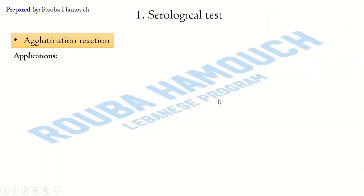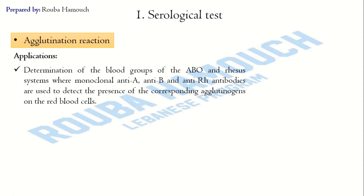The first application of agglutination reaction is the determination of blood groups in the ABO and Rhesus systems, where we use monoclonal antibodies — anti-A, anti-B, and anti-Rhesus — to detect the presence of the corresponding agglutinogens on the red blood cells. Monoclonal antibodies are antibodies having the same specificity, derived from the same clone of plasmocytes, produced in the lab to detect or identify agglutinogens.